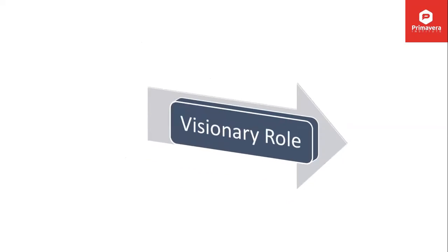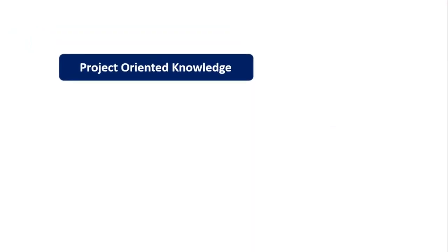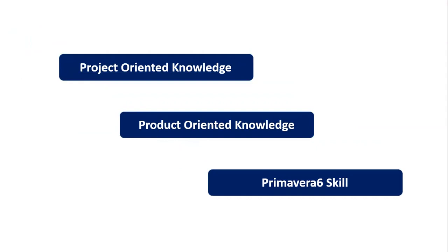This is actually a visionary role. Why? Because it has three P's. First P stands for project-oriented knowledge. Second P stands for product-oriented knowledge. Third P stands for Primavera skills. If you combine these three skills, you will be a professional planning engineer. Let's start with project-oriented knowledge, then product-oriented knowledge, and then Primavera 6 skills.